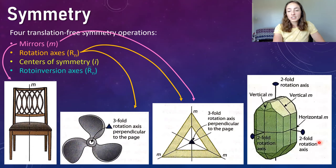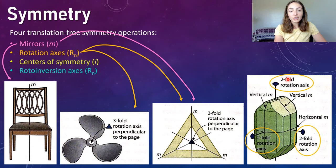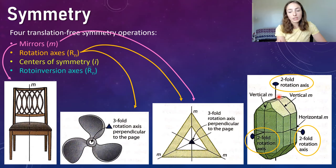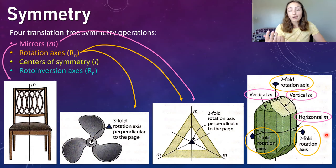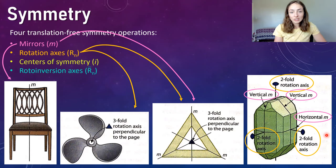Looking at the bottom right example, we have rotation axes that are twofold rather than three. The axis going up and down through the center of this crystal shows that rotating around it for a full 360 degrees produces an identical image only twice. The same goes for the other two rotation axes. We also have vertical and horizontal mirrors — vertical ones going through the crystal vertically and horizontal ones going through horizontally.